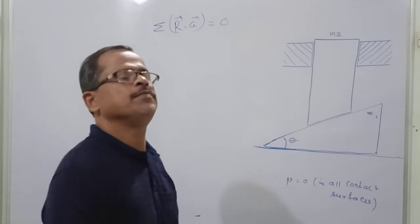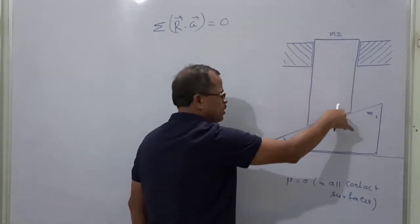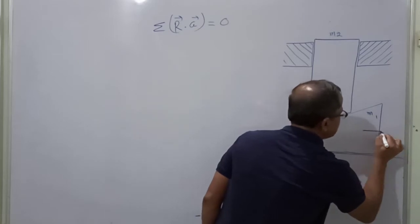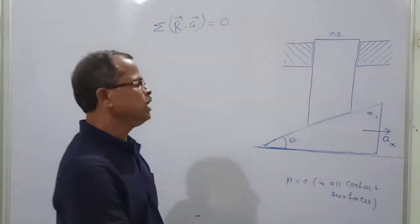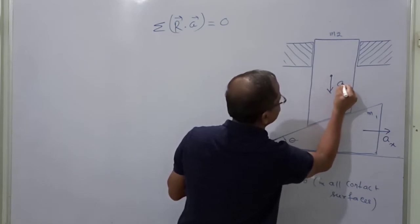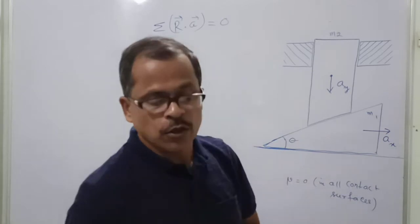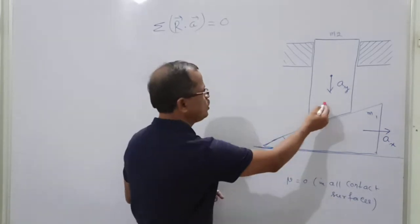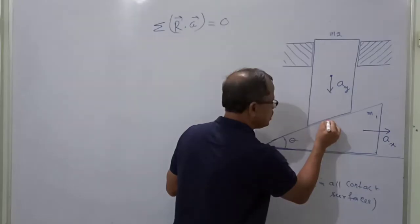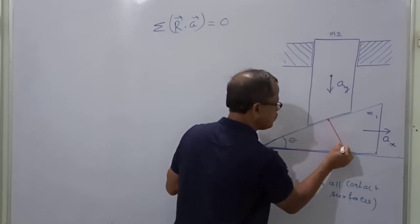Since there is no friction in this problem, this wedge — this is called a wedge — will fall on this body. When the wedge falls, this body will go to the right. Let the acceleration of the body going right be equal to AX. If this body goes to the right, then the wedge will come down. Let the acceleration of the wedge coming down be equal to AY. The only force of interaction between the two bodies is the normal reaction. Contact force is always normal to the surface, so this normal reaction is R.